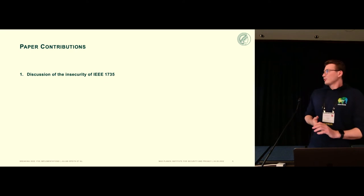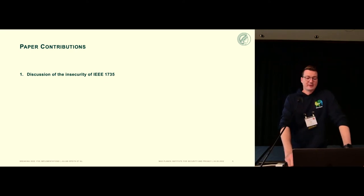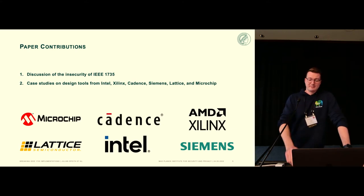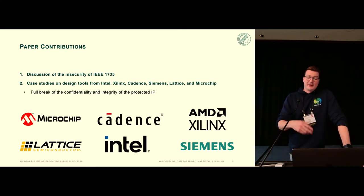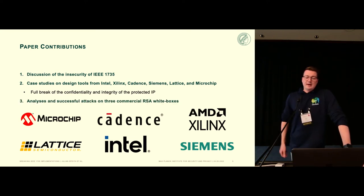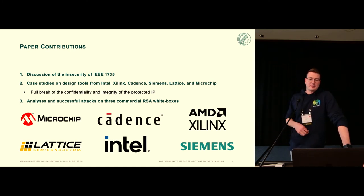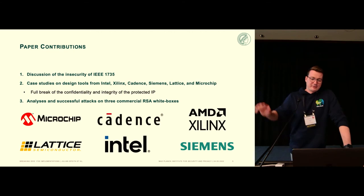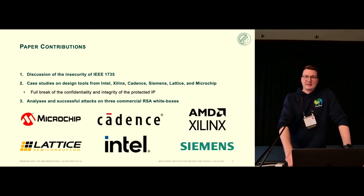Our contributions in our paper are threefold. First, we discuss the insecurity of IEEE 1735. Then we present six case studies on implementations from Intel, Xilinx, Cadence, Siemens, Lattice, and Microchip, that all lead to a full break of the confidentiality and integrity of the protected IP. In the process of doing the case studies, we also stumbled upon three RSA white box schemes, which we successfully attacked and broke.